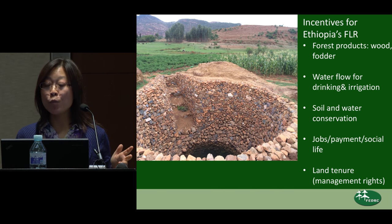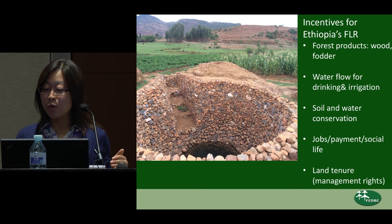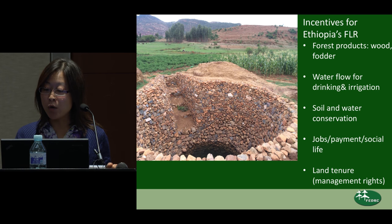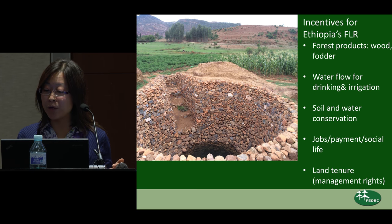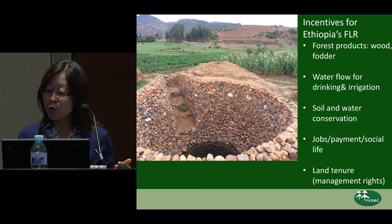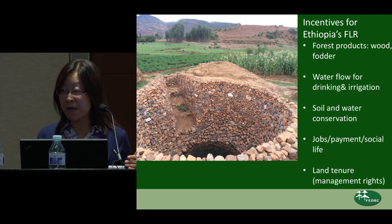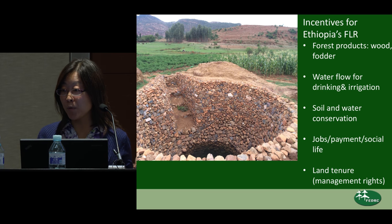Incentives for Ethiopia's FLR include both on-site and off-site benefits that directly influence households' daily life. These are mainly timber and non-wood forest product needs, such as fodder, and water flows for drinking and irrigation. Payments and jobs from participating in forest management are also attractive for farmers. The future ownership of the land is also expected by households as an incentive.